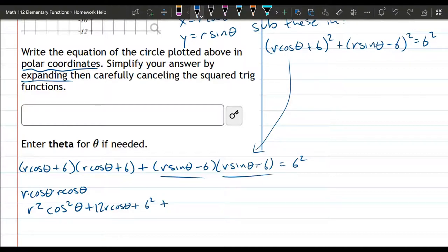Now we FOIL out these two terms, we're going to do this a little bit more quickly, it's going to be very similar. So we have r squared sine squared theta, that's the first. Outside, inside, they're both negative 6 r sin theta, and negative 6 r sin theta, that's negative 12 r sin theta. Negative 6 times negative 6 is plus 6 squared, because those two negatives cancel.